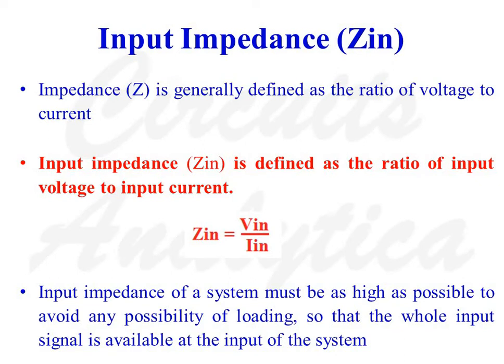Input Impedance Z — impedance of a system is generally defined as the ratio of voltage to current. Input Impedance Zin is defined as the ratio of input voltage to input current: Zin equals Vin divided by Iin. Input impedance of a system must be as high as possible to avoid any possibility of loading, so that the whole input signal is available at the input of the system.